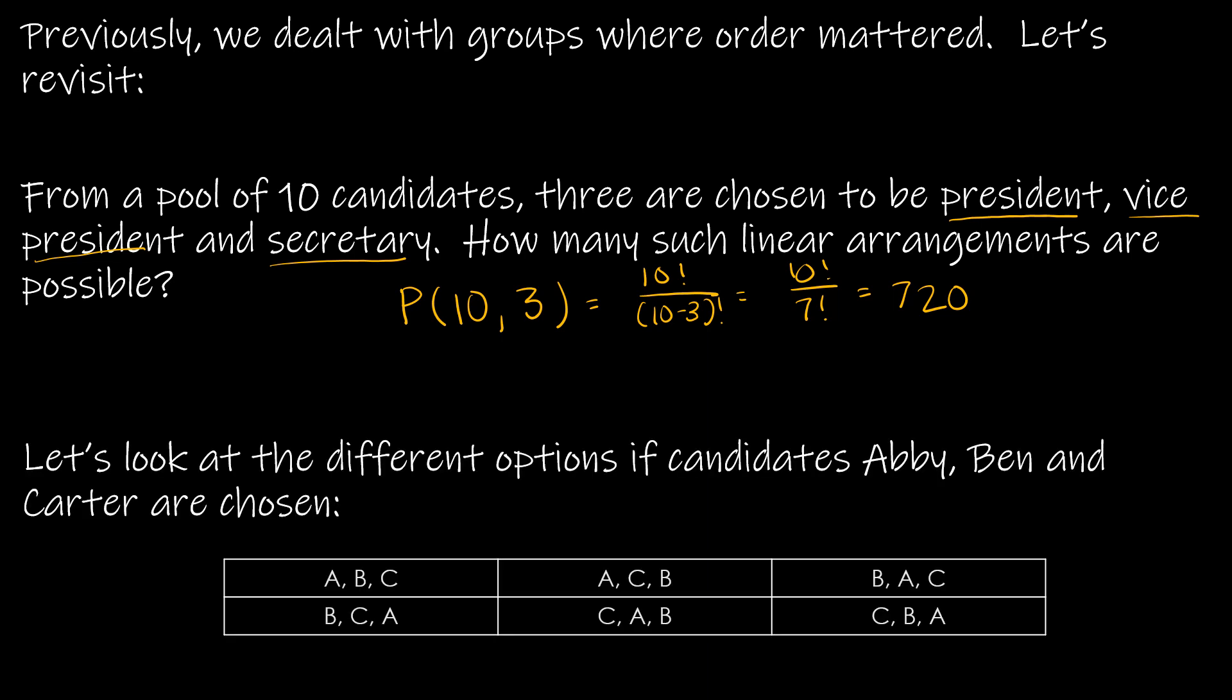Now, if we take a look at the different positions of, say, Abby, Ben, and Carter, we have Abby president and then Ben vice president, Carter secretary, or Abby president and then Carter vice president and Ben as secretary. So we get the idea that all six of these are combinations where Abby, Ben, and Carter are one of the three candidates chosen.